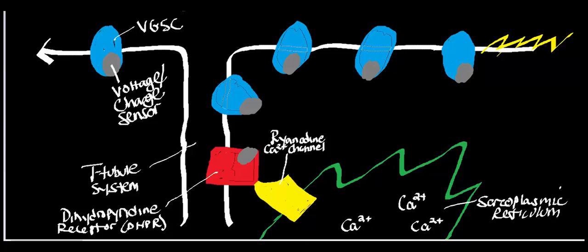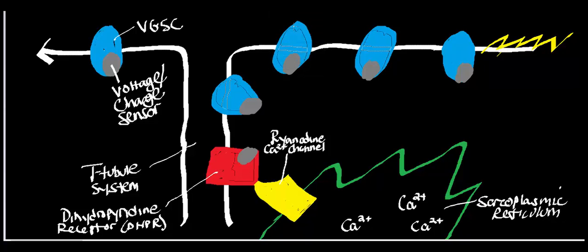Welcome back to the Muscle Physiology Playlist. This begins our discussion of this week's topic. In the last week, we talked about the physiology of the voltage-gated sodium channels and how they are essentially what propagate the action potential along the muscle cell membrane.